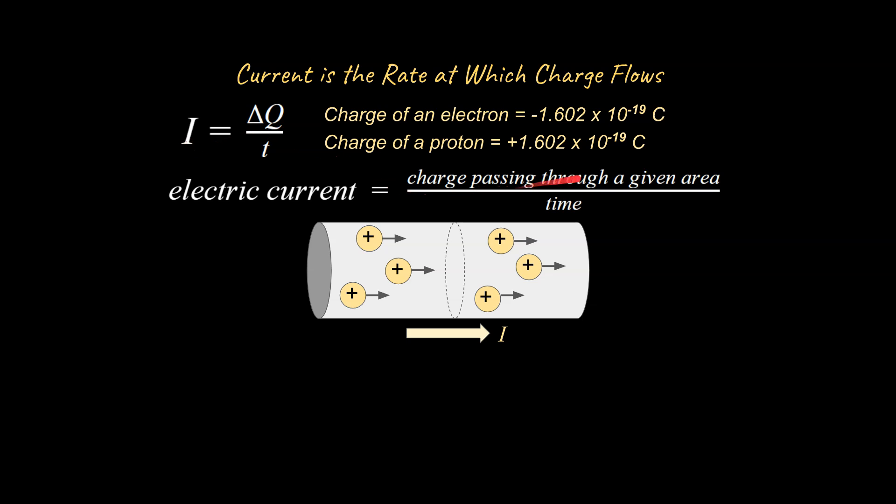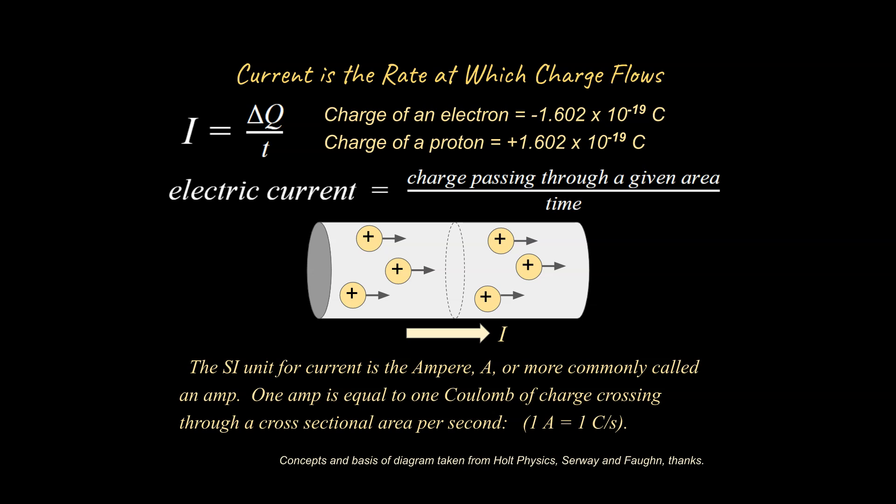Current is the amount of charge passing through a given area divided by time, so it's the rate at which charge is flowing, you could say, through a given area, like the cross-sectional area of a wire, for instance. Current is represented by I, and charge is represented by Q, and current has units of amperes or amps for short.